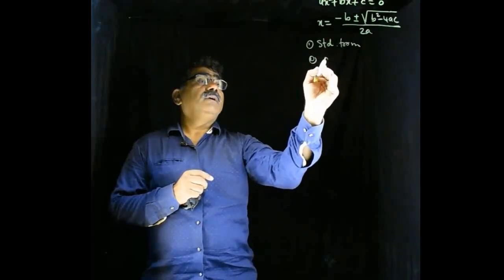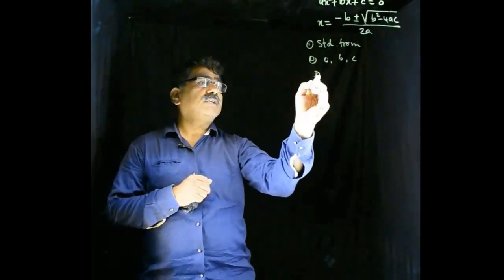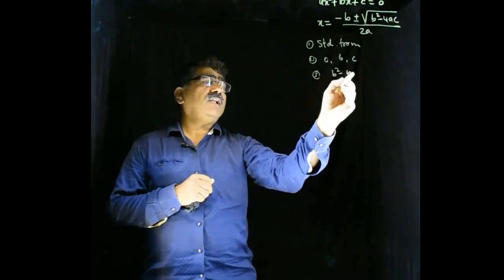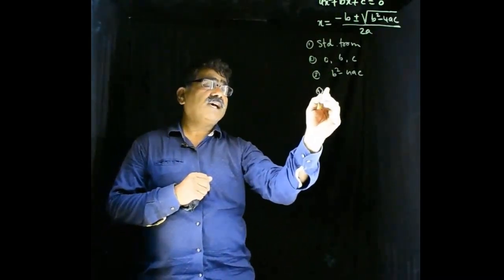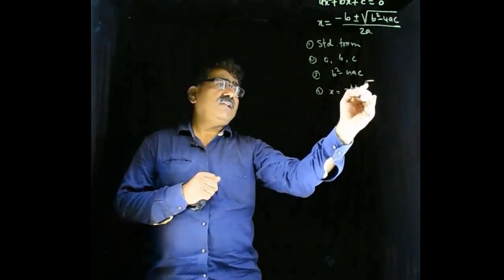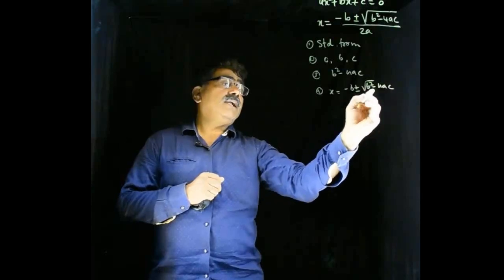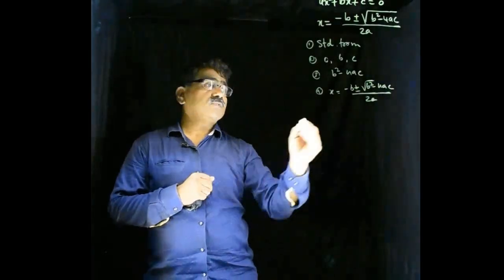Second, getting values of a, b, c. Third, finding value of b square minus 4ac. Fourth step, using formula, writing formula and substituting values of this value b square minus 4ac upon 2a.